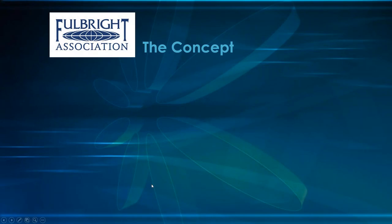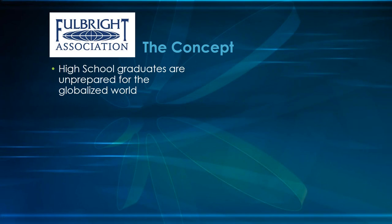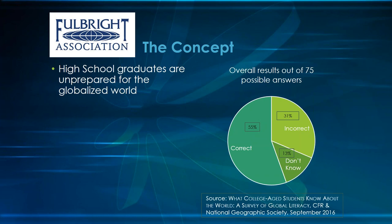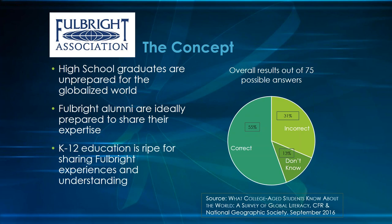Let's look at the concept of what Fulbright in the Classroom is going to look like. We began with the premise that high school graduates are unprepared for the globalized world. In a survey by the Council on Foreign Relations and the National Geographic Society, of 75 questions the average student got only 55% correct—31% answered incorrectly and 13% didn't know. We believe Fulbright alumni are ideally prepared to share their expertise, and K-12 education is ripe for sharing Fulbright experiences.